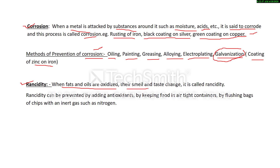The next and last topic of this chapter is rancidity. When fats and oils are oxidized, their smell and taste change — this is called rancidity. At home, oily food items kept for a long time will smell bad. The oil present in food items reacts with oxygen and forms some other poisonous substances, which is why their smell and taste change. This process is called rancidity.